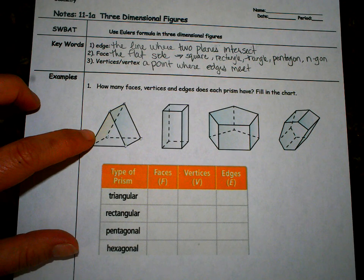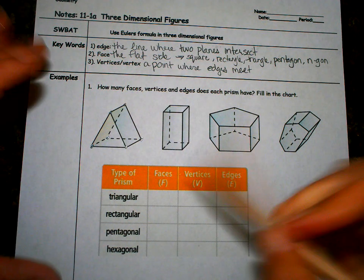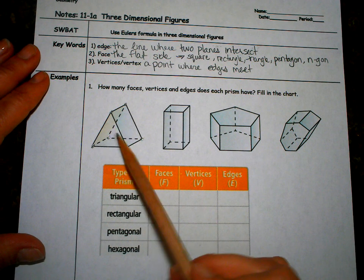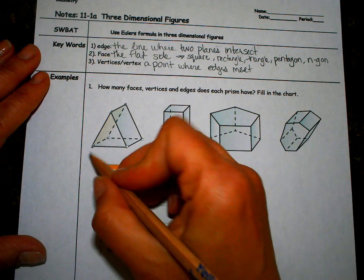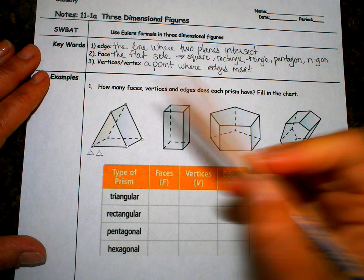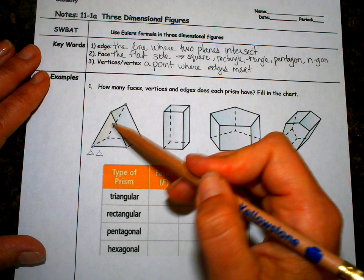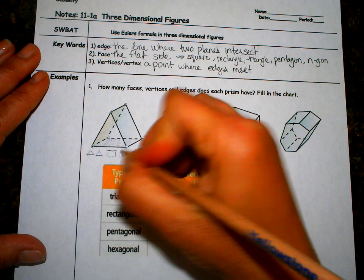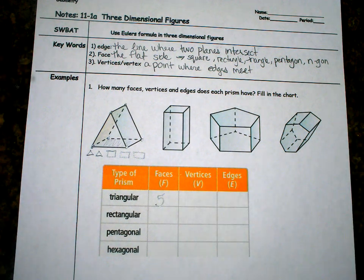A triangular prism. So a triangular prism, how many faces does it have? Faces are the flat surfaces. So it's like the front triangle and the back triangle. Those are the two triangles in the prism. So I have a triangle, a triangle, and then I have these rectangles. One rectangle goes downward this way. Another rectangle goes downward this way. And then the third rectangle is on the bottom. So that's going to be five faces of the triangular prism.